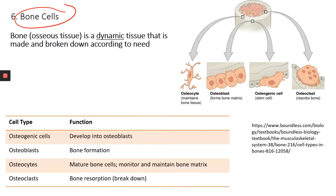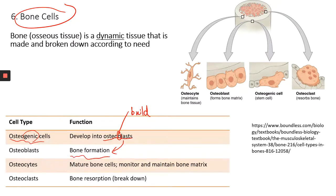First, we have osteogenic cells — 'genic,' like genesis, meaning you're making things. Osteogenic cells can develop into osteoblasts. Osteoblasts — remember, 'B' indicates 'build' — are the bone cells that synthesize bone matrix, so they are known as the bone-forming cells. Osteoblasts come from osteogenic cells; these are the stem cells that can develop into osteoblasts.